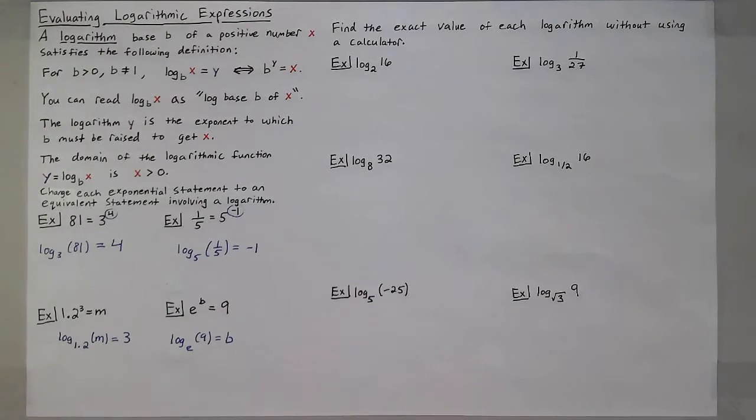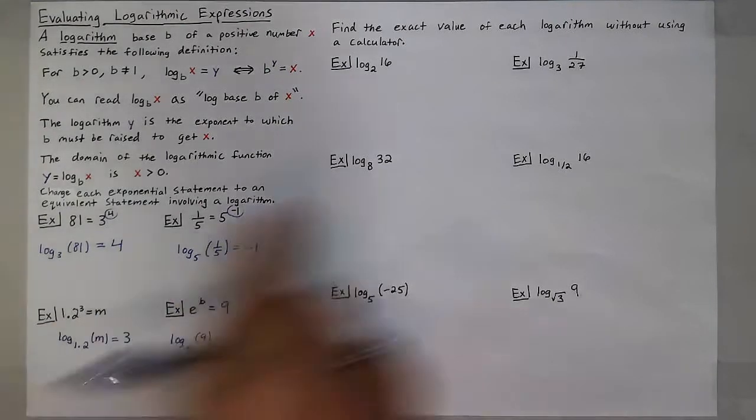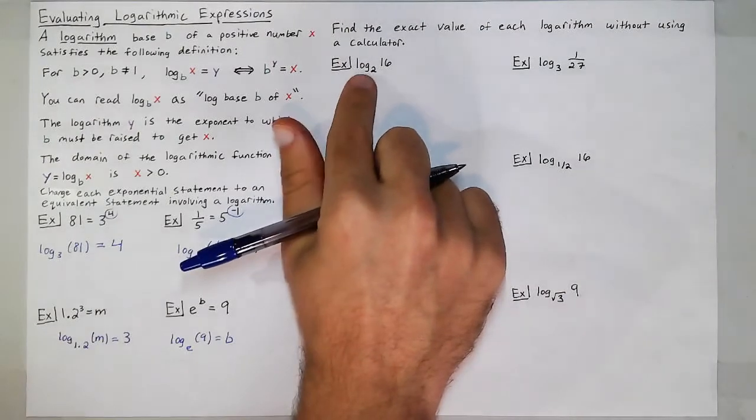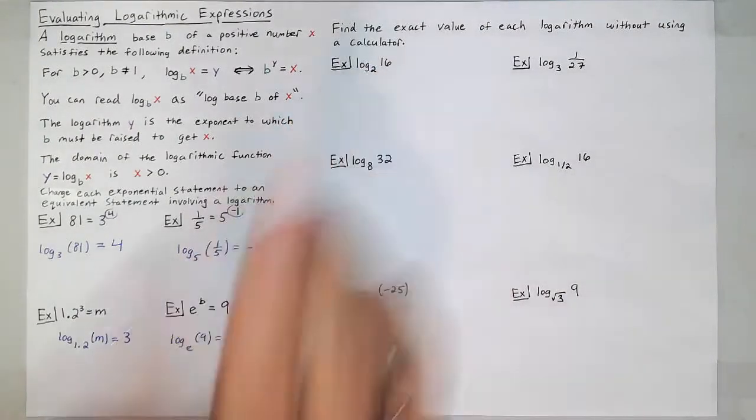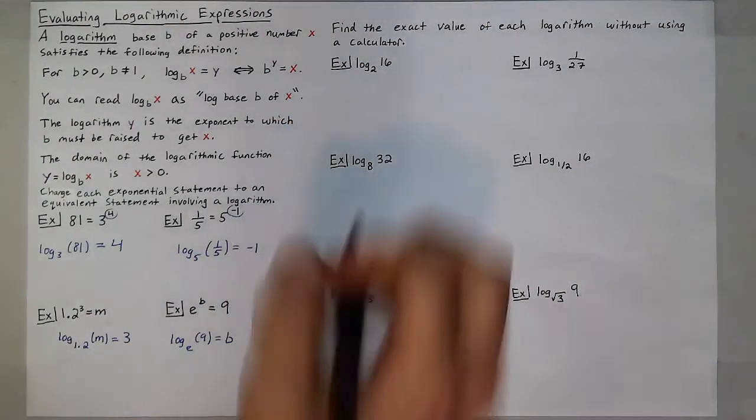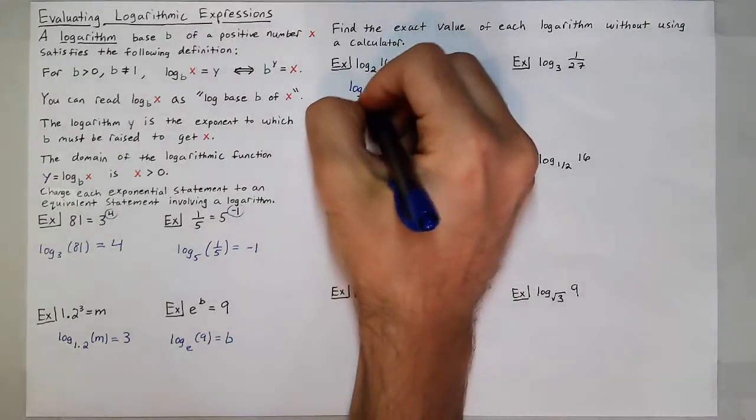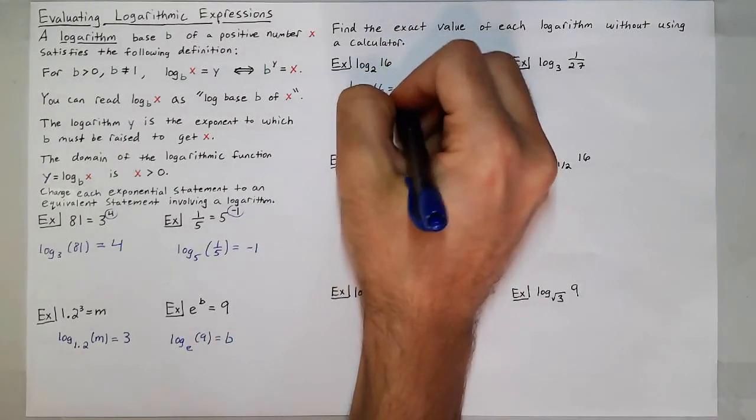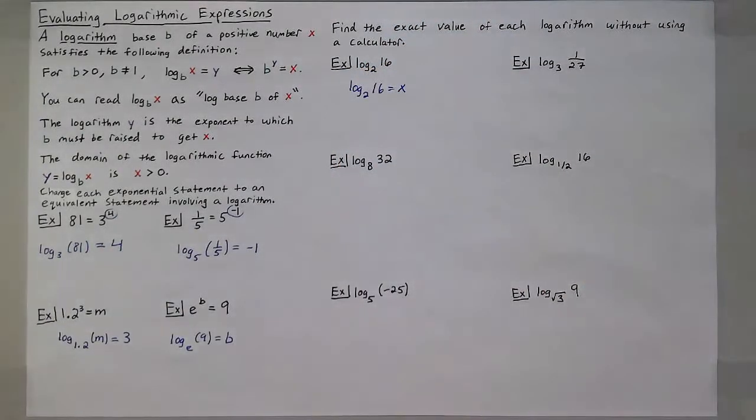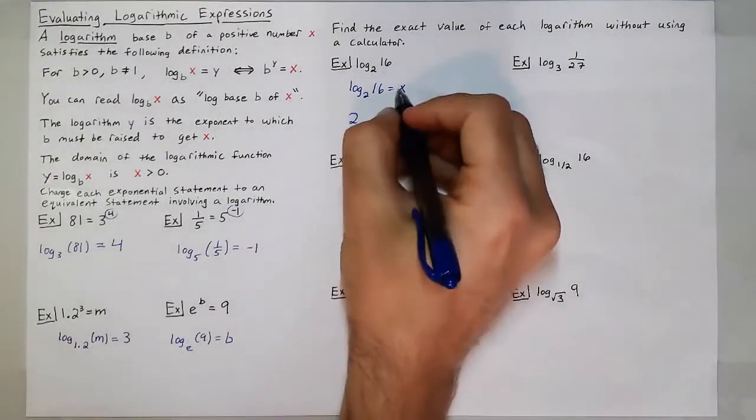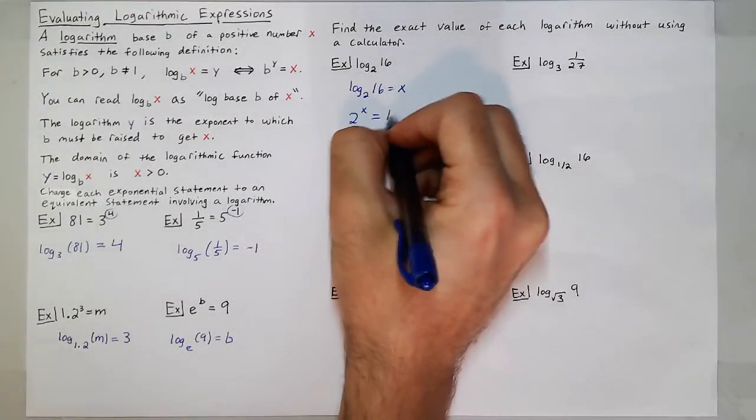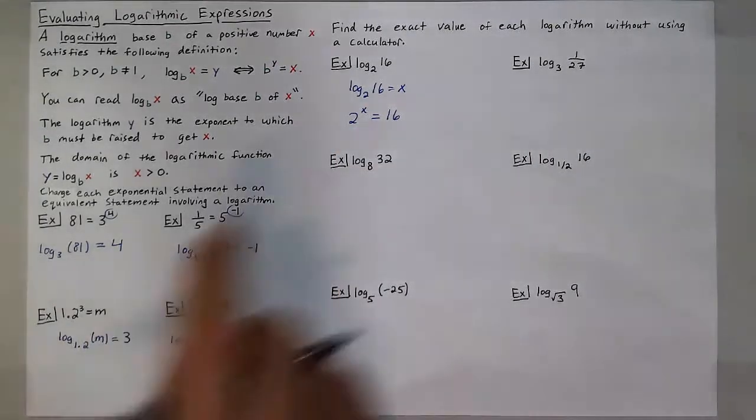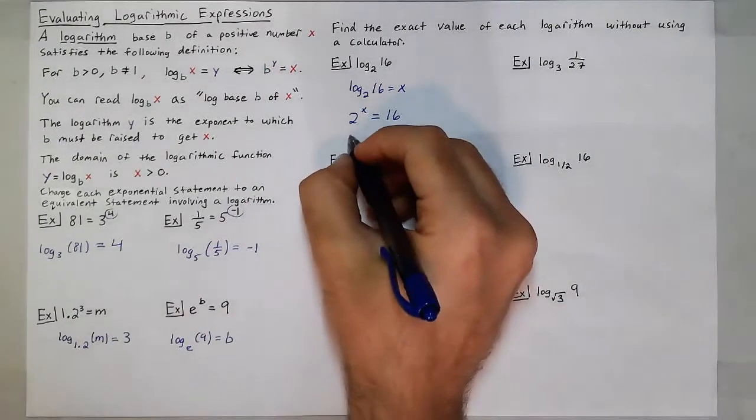Now let's try to find the exact value of each logarithm here without a calculator. So I have log base 2 of 16, so the question I'm asking myself is I'm looking for what is the exponent I get from this log. Because it's 2 to some power should give me 16.